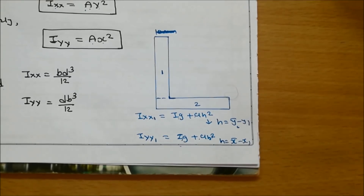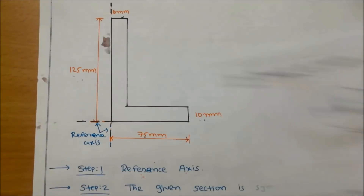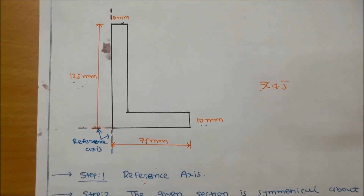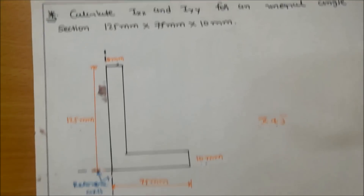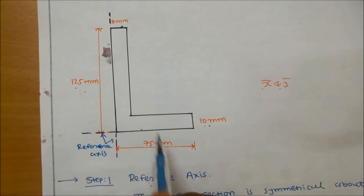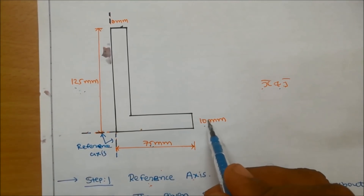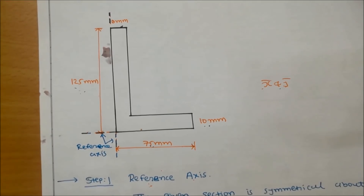Now we solve an example. The numerical data given: find the moment of inertia for an unequal angle section with dimensions 125 mm, 75 mm, and 10 mm thickness. For finding moment of inertia, first find the center of gravity.